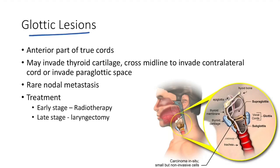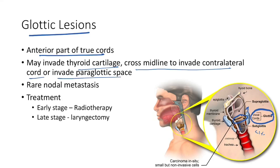CA glottis occurs in the anterior part of the true cords. Glottic lesions may invade thyroid cartilage, cross the midline to invade the contralateral cord, or invade the paraglottic space. Nodal metastasis is rare in glottic lesions unlike supraglottic lesions. Subglottic cancers are rare but have a very poor prognosis. Treatment: same as supraglottic — radiotherapy for early stage; laryngectomy for late stage.